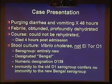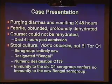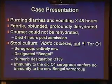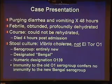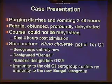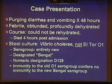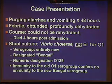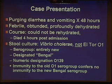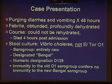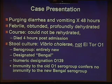This gentleman presented with a purging diarrheal illness and vomiting of 48 hours duration. When he was seen in the Matlab Health Center, he was found to be febrile, obtunded, and profoundly dehydrated. His course was very brief — he expired within four hours. He could not be rehydrated, and his state of cardiovascular collapse from dehydration simply couldn't be reversed.